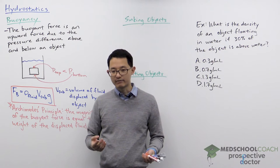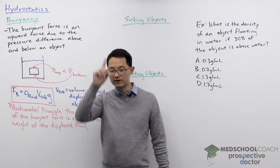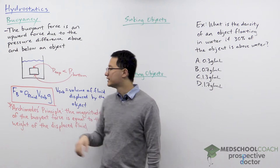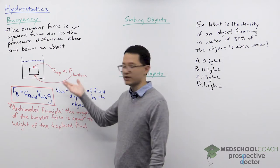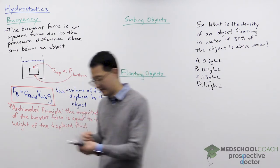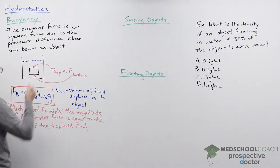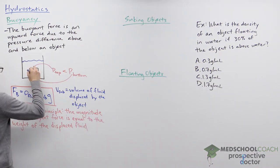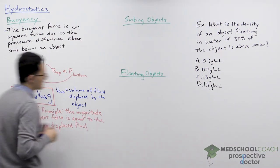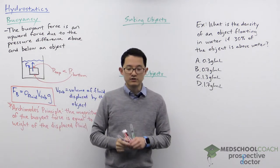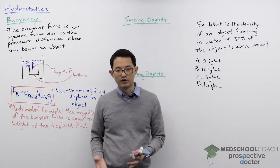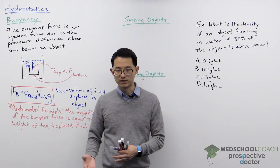If the pressure below is greater than the pressure above, you're going to end up with a net upward force. This net upward force is the buoyant force, which is due to the pressure difference above and below the object.